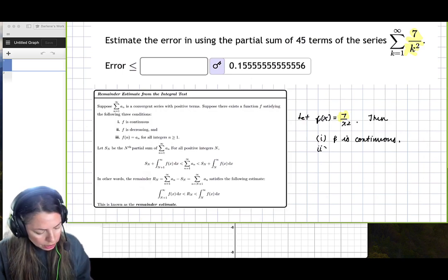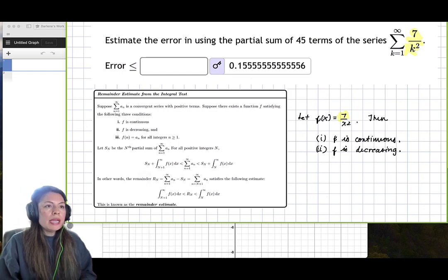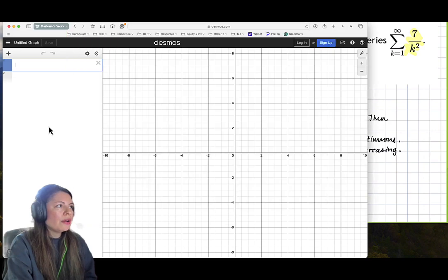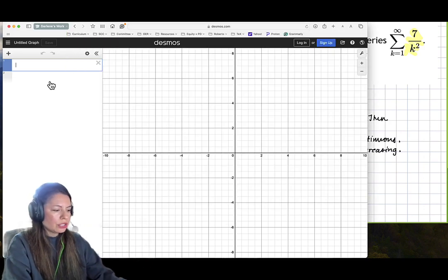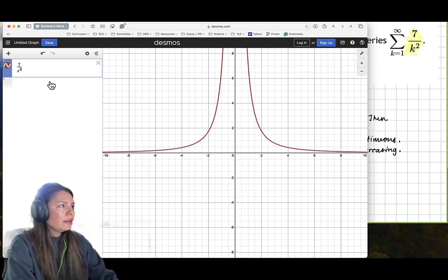The second one is f has to be decreasing. We can go ahead and use a calculator or some technology for that. So I just have Desmos right here and I'll just go ahead and put 7 over x squared in there just like that.